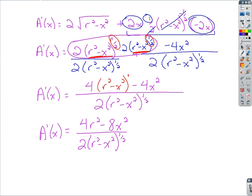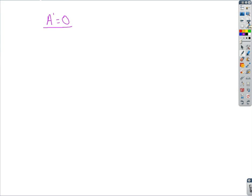Take your numerator, the 4r squared minus 8x squared, set that equal to 0. You are solving for x. So when you solve for x, you're swinging the 4r squared over. You're dividing by a negative 8. So divide by the negative 8. Negatives cancel. You get 4 over 8, so that's one half.